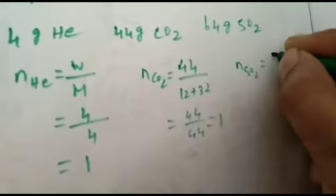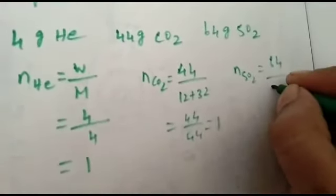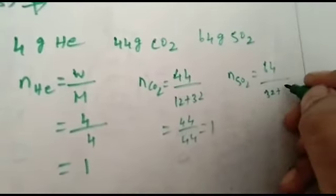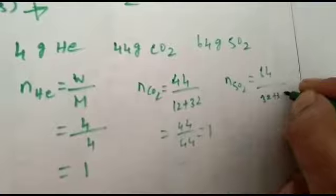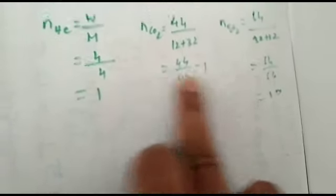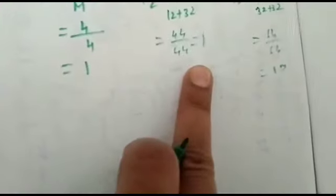Sulfur dioxide: number of moles equals 64 divided by sulfur 32 plus oxygen 32, so 64 divided by 64 equals 1 mole. So all the gases, weight is different, but the volume for helium, carbon dioxide, sulfur dioxide, all are the same: 1 mole gaseous state, but weight only different.